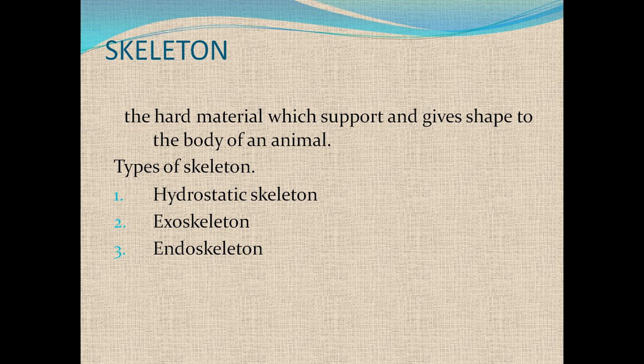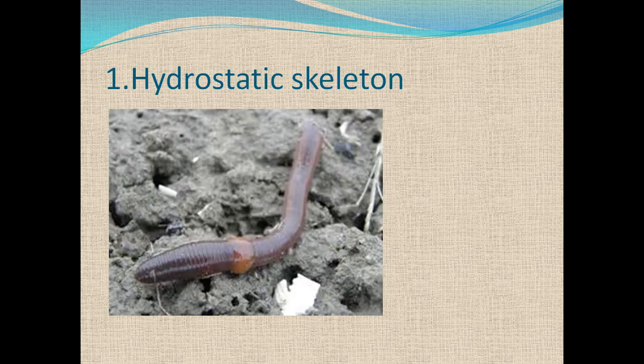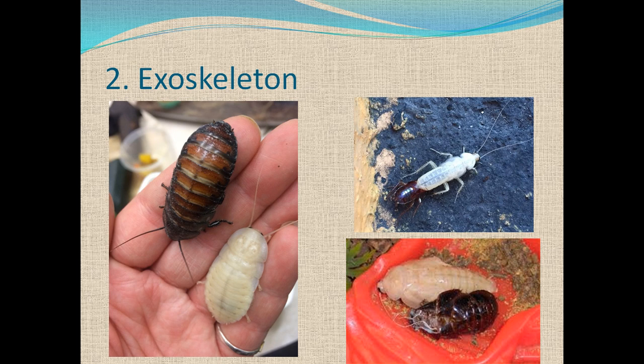Now explaining the skeletons one by one in detail. Hydrostatic skeleton: some soft-bodied animals like earthworms and caterpillars do not have a hard skeleton. Their bodies are supported by a liquid which is present in the cells and in the spaces between them. This type of skeleton is called a hydrostatic skeleton.